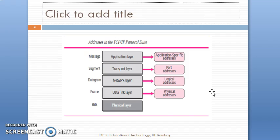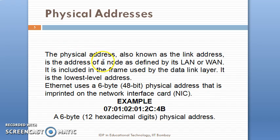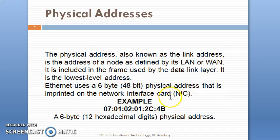The physical address, also known as the link address or MAC address, is the address of a node as defined by its LAN or WAN network. It is included in the frame used by the data link layer. Ethernet uses a 6-byte, 48-bit physical address that is imprinted on the network interface card. Here is an example of a physical address — it is 48 bits.